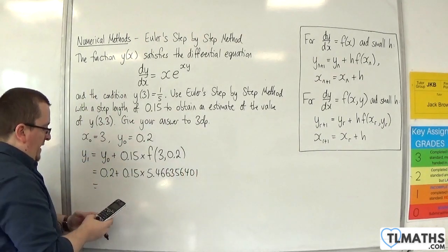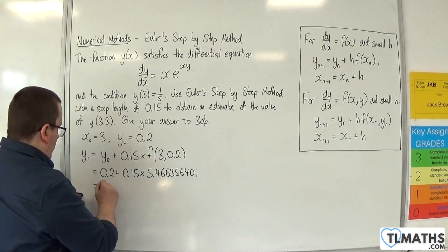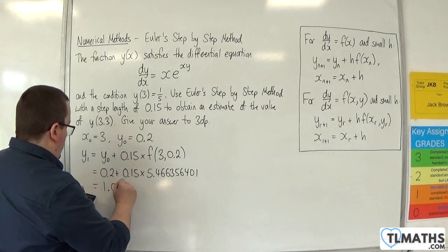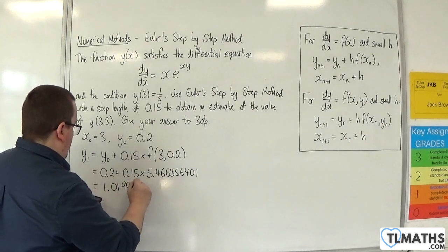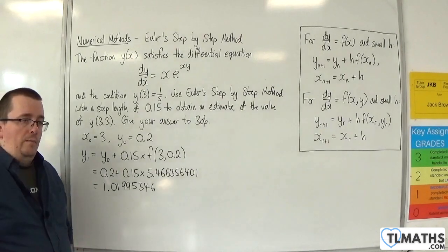So I'm timesing that by 0.15 and adding on 0.2. So I get 1.01995346. So I've got y₁.